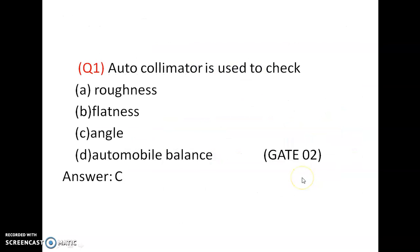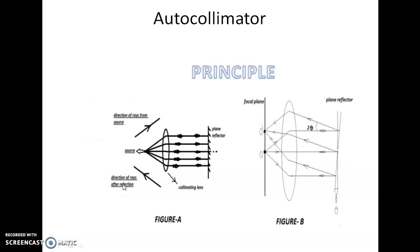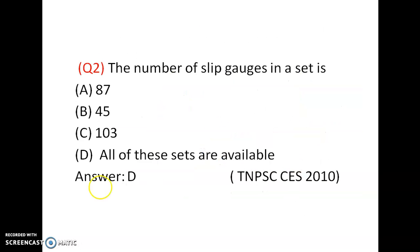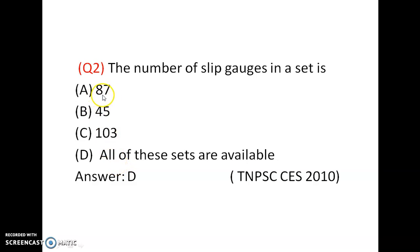The autocollimator is used to check the angle, so the answer is C. Question on slip gauges: the number of slip gauges in a set is 87, 45, 103 — so the answer is D, all the sets are available.